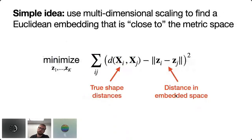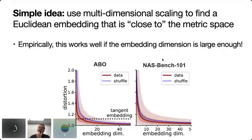We use classic multidimensional scaling, which optimizes over embedded vectors Z1 through Zk minimizing the stress objective function. Once we have these optimized embedded vectors, we can use them for downstream tasks. Empirically this works well because the embedding recapitulates the shape distances to a very high degree of accuracy. If we accept this approximation error, we can use essentially any off-the-shelf machine learning model from scikit-learn to compare neural representations at cohort level.